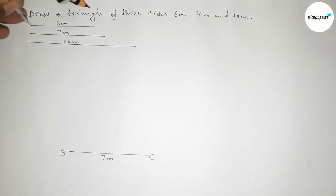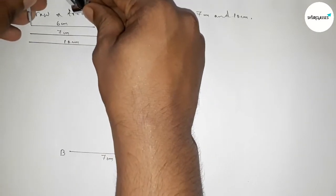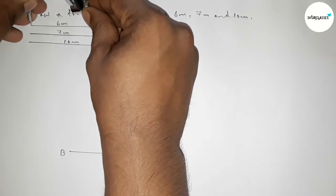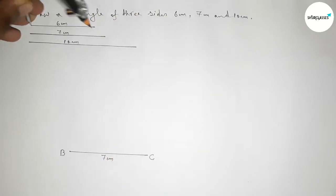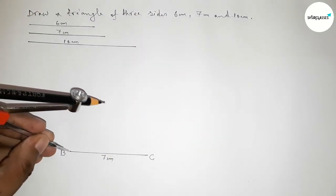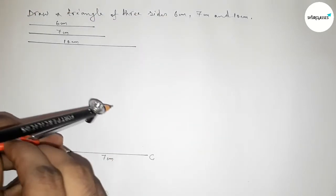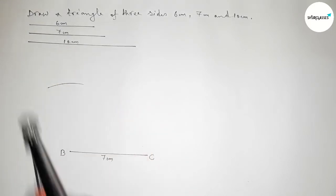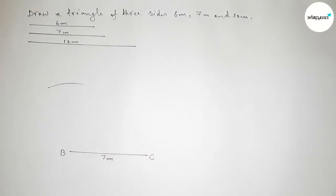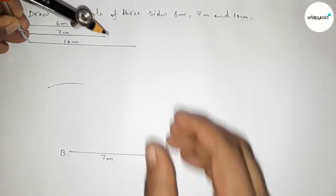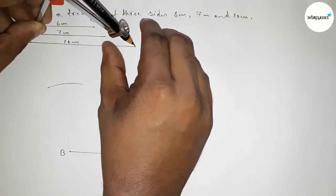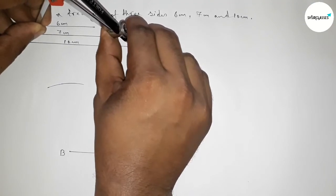Next, taking the length 6 centimeter by using compass, and putting the compass on point B and drawing an arc.